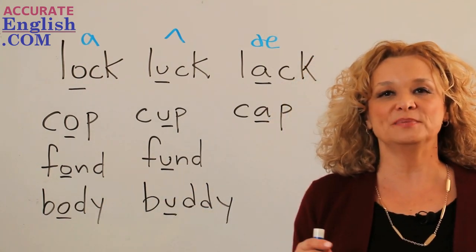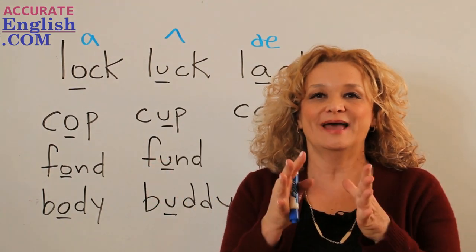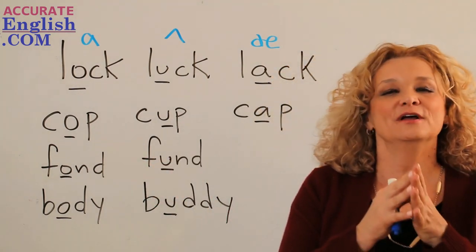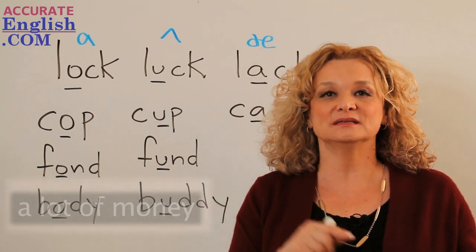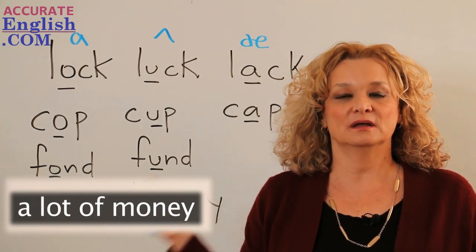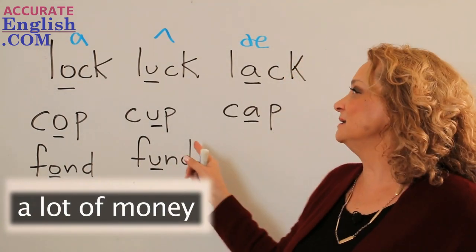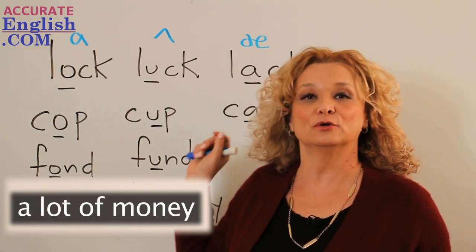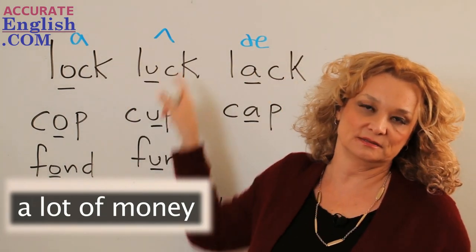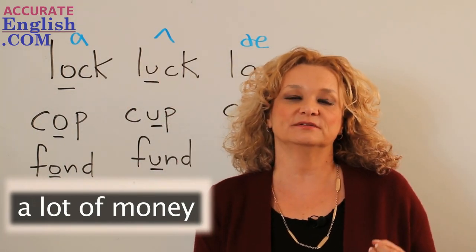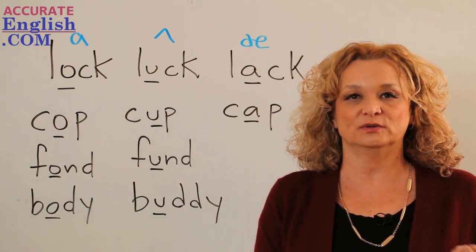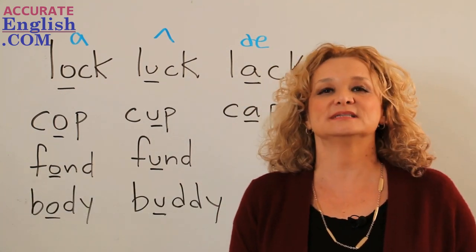Now let's practice a combination of words where they have those two sounds together. For example, a lot of money. A lot of money. Now money is spelled with the letter O, but it is pronounced with this sound. And there are other words, very common words that are spelled with an O, but they have an uh sound.